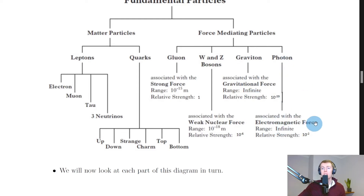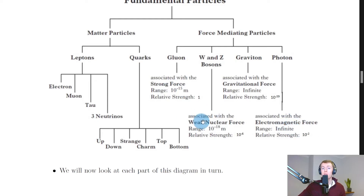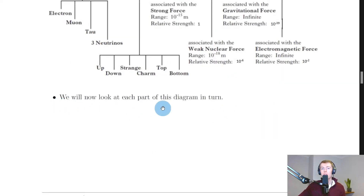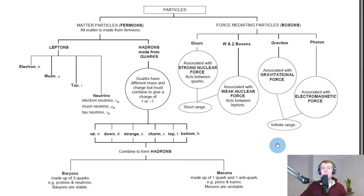The photon is associated with the electromagnetic force and also has an infinite range, with a relative strength of about 10 to the minus 2. In terms of force strength, the order is: strong nuclear force first, followed by the electromagnetic force, then the weak nuclear force, and finally the gravitational force as the weakest. In future theory videos we'll focus on different parts of this standard model in turn.